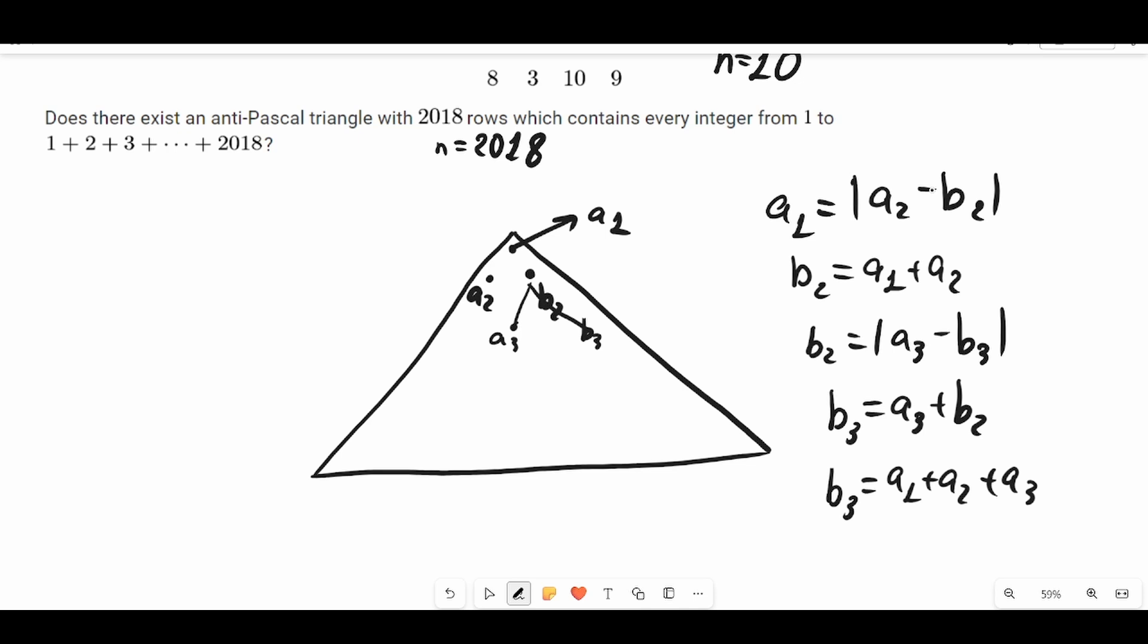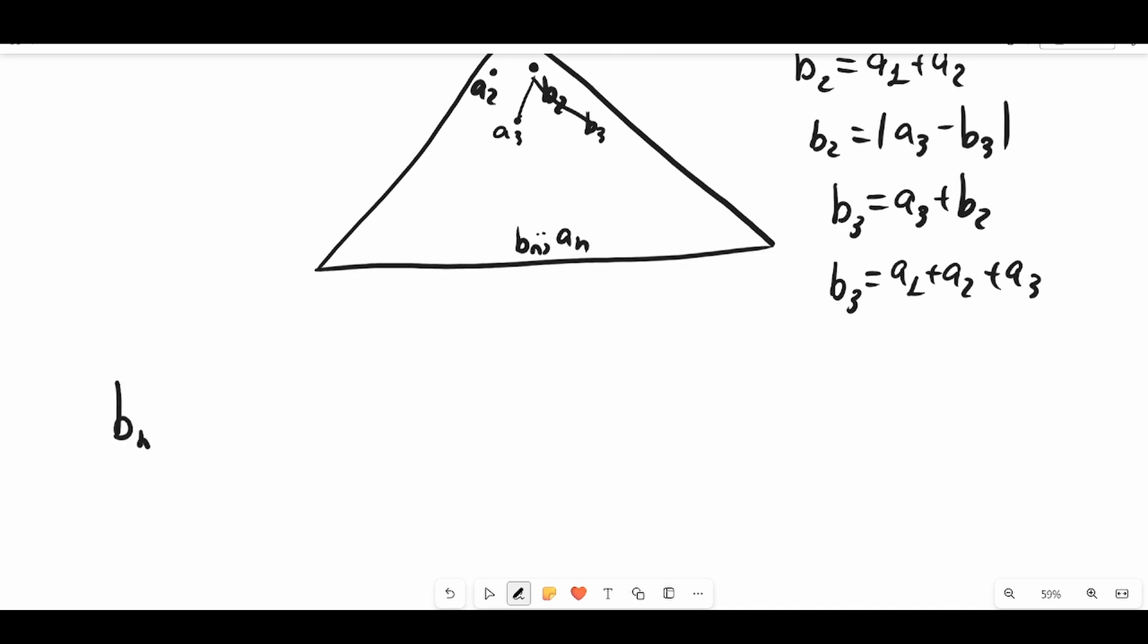Here we get bn and an, so bn must equal the sum of the previous n numbers: a1 plus a2 plus all the way up to an. Because we know that all of these numbers a1, a2, ... must be different, this means that bn is greater or equal to 1 plus 2 plus all the way up to n. And n is 2018 in our case, so this is greater or equal to n times (n+1) over 2.